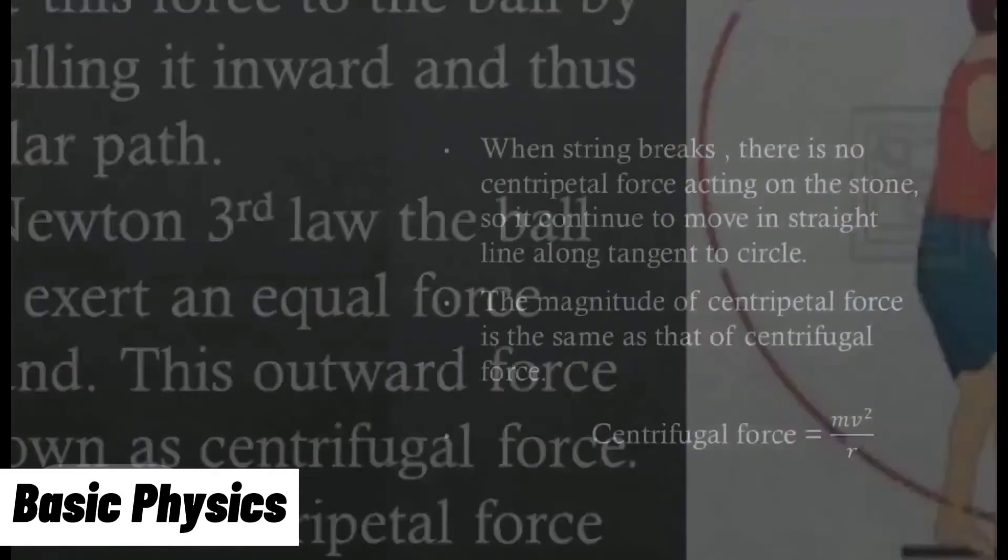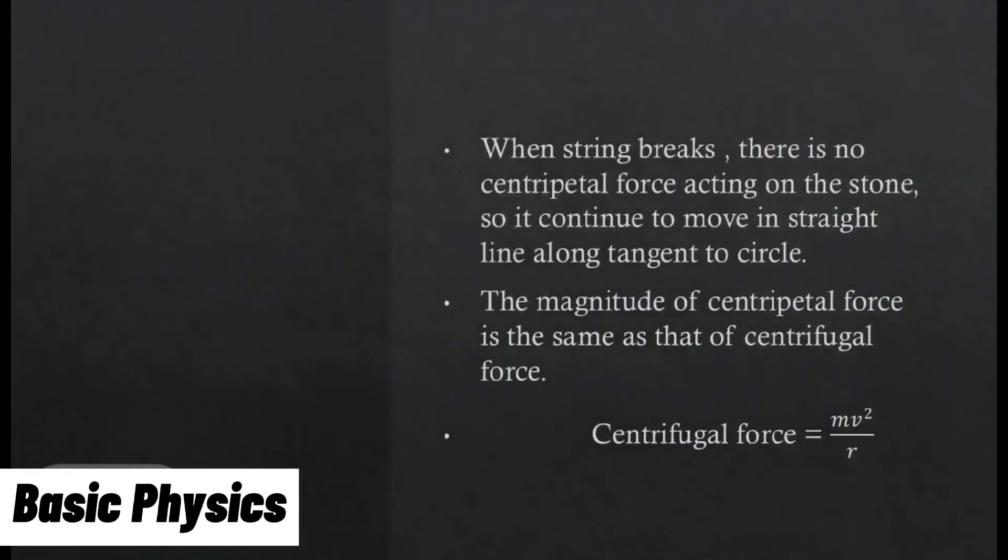If the string breaks, then centripetal force is suddenly removed. When string breaks, there is no centripetal force acting on the stone, so it continues to move in straight line along tangent to circle. The magnitude of centripetal force is the same as that of centrifugal force: F = mv²/r.